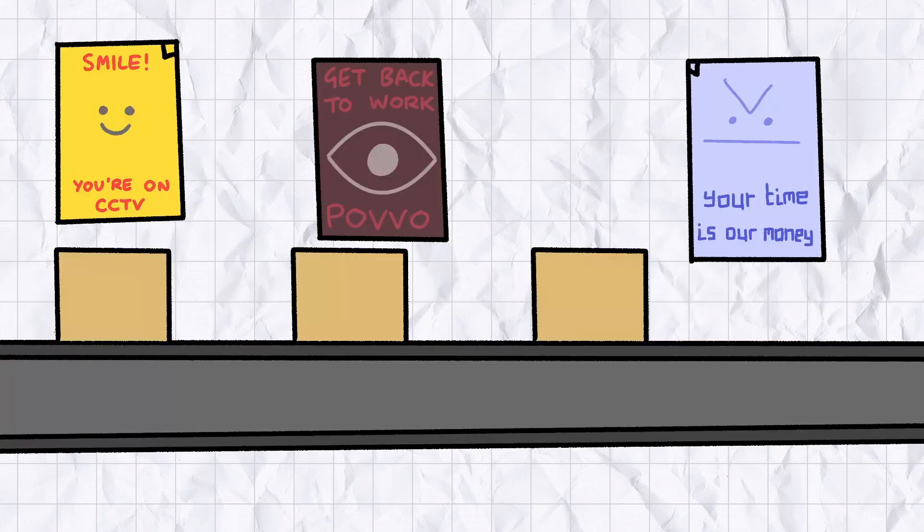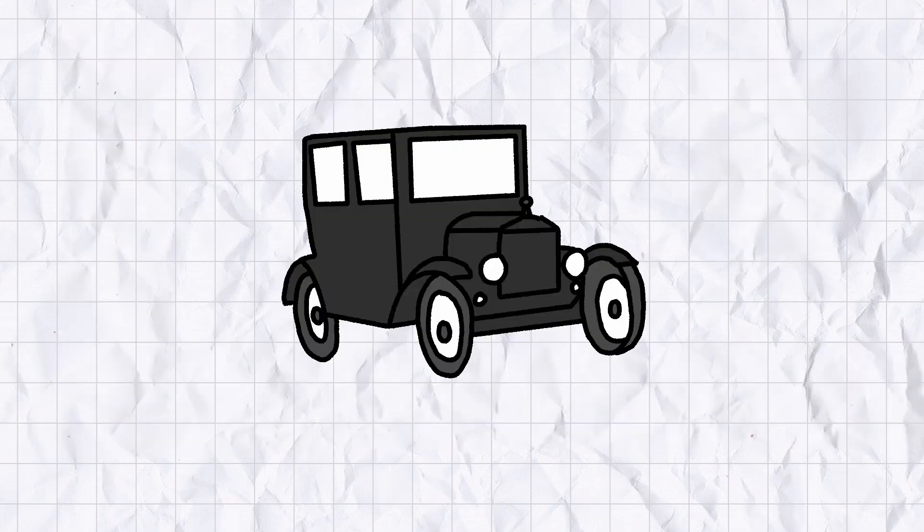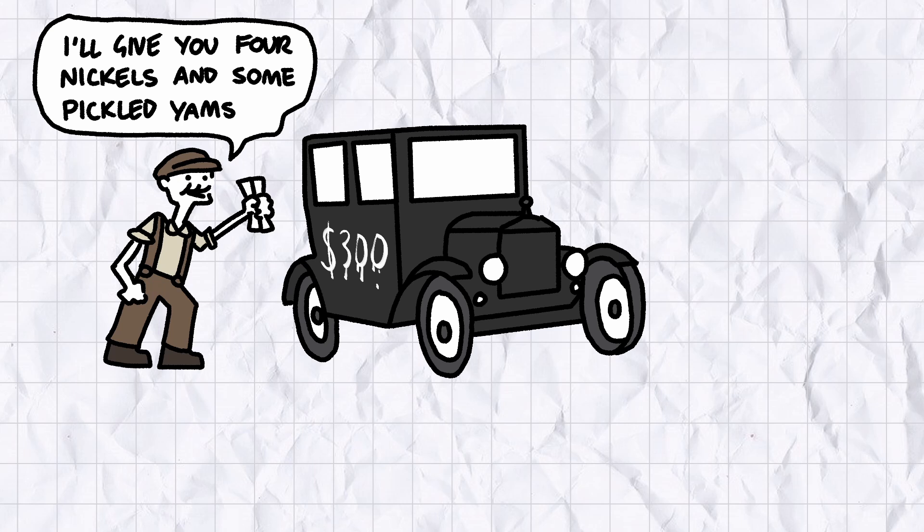For better or worse, the creation of the assembly line was an invention that changed society as profoundly as the light bulb, the printing press, and Kellogg's Crunchy Nut corn flakes. Goods that took days to make could now be made in hours. Ford was able to sell Model Ts at a profit for only $300, about four months' salary for the average worker at the time.